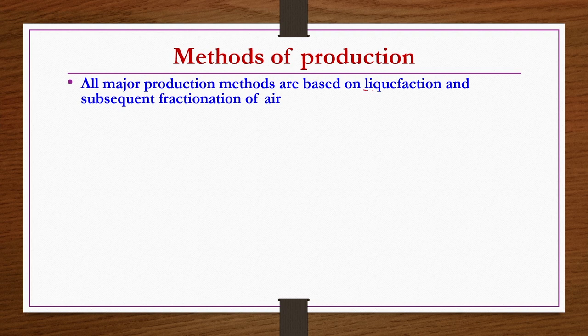Now we will see methods of production of O2 and N2. All major production methods are based on liquefaction followed by subsequent fractionation of air. There may be small variations from one plant to another, and most importantly, O2 and N2 are often produced on site, especially from an industrial applications point of view.